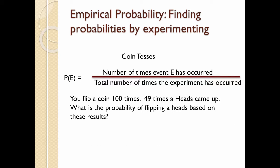Here's another experiment, a coin toss. So you get a coin, let's say you flip it 100 times. Let's say that 49 times heads comes up. So what's the probability of flipping a heads just based on these results? Well, it would be 49 out of 100 or 0.49 or 49 percent.